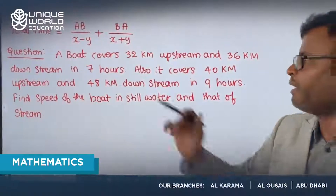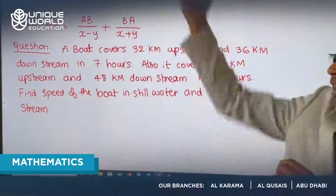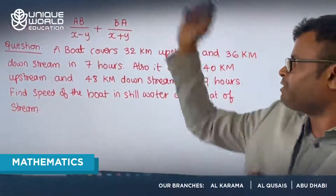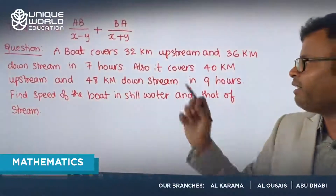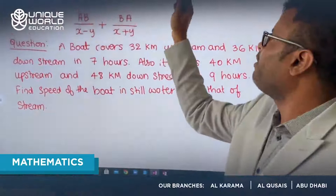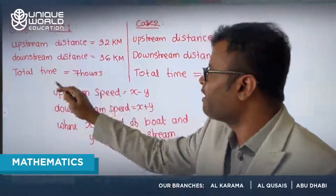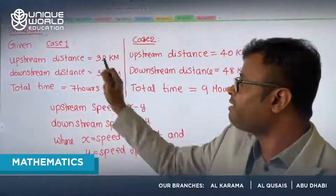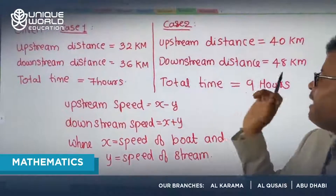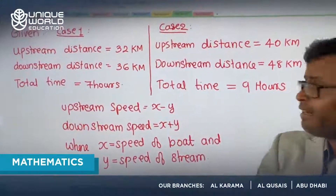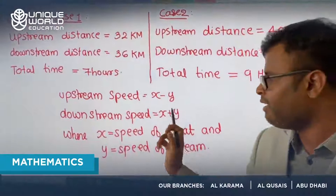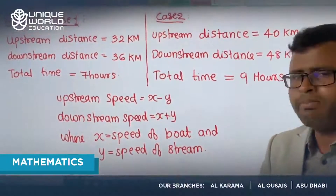For example: a boat covers 32 km upstream and 36 km downstream in 7 hours total. In a second situation, it covers 40 km upstream and 48 km downstream in 9 hours. We need to find x (speed of the boat) and y (speed of the stream). In Case 1: upstream distance = 32, downstream distance = 36, total time = 7 hours. In Case 2: upstream distance = 40, downstream distance = 48, total time = 9 hours.